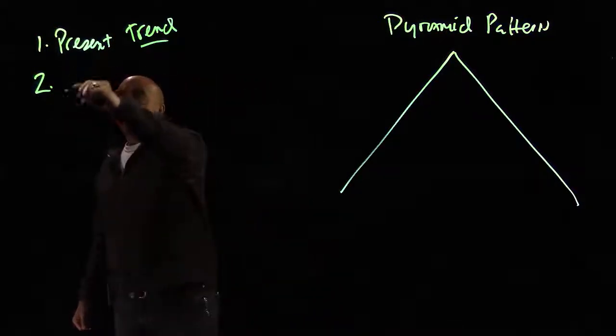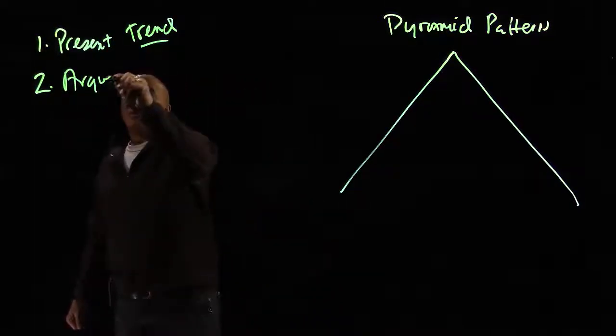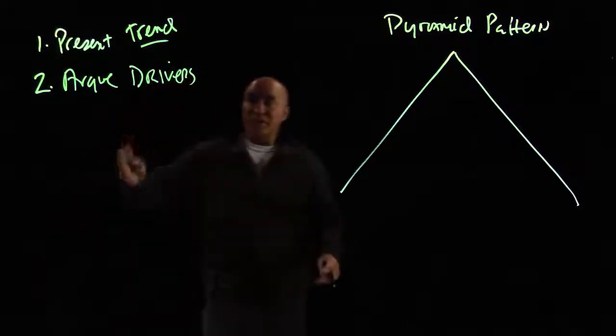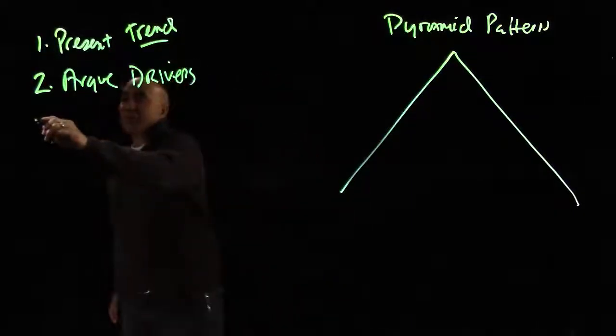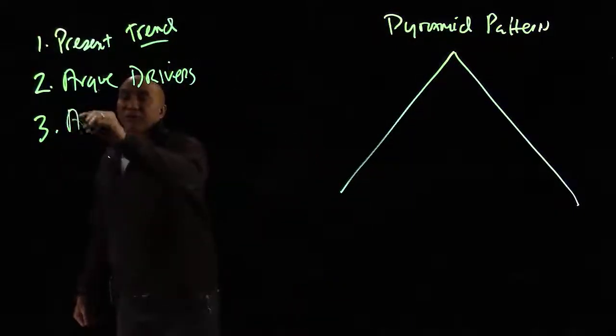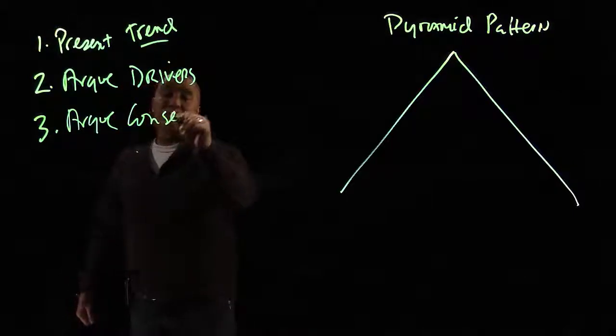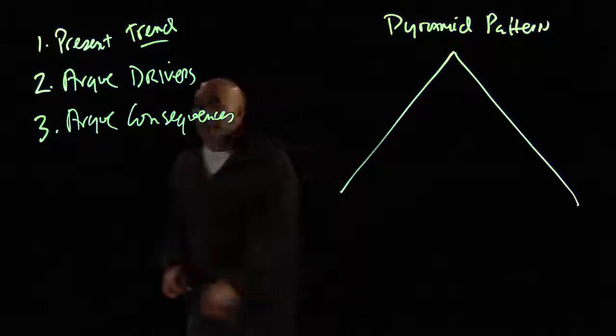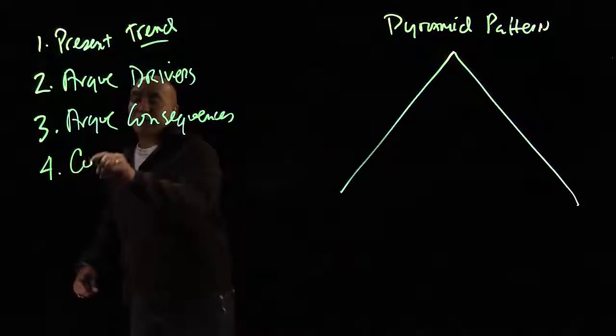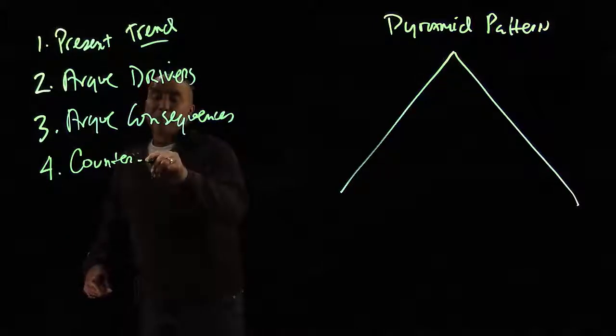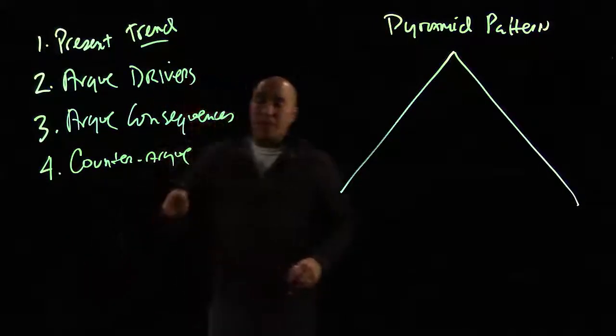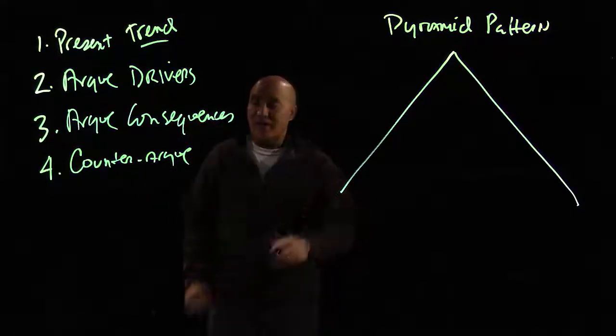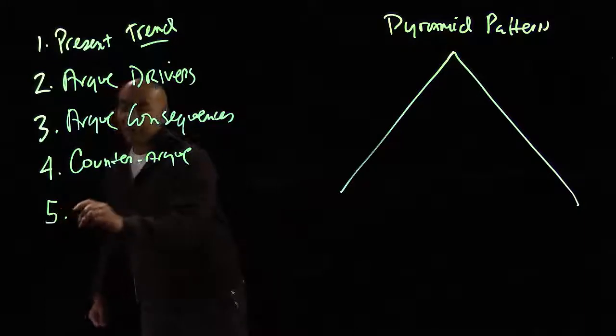Number two, now they have to argue for the drivers. Drivers that would drive this trend. Number three, they have to argue for consequences, or long-term effects. Number four, this is the counterargument section. And I call it, this is a little tricky for the first get, but then after they get it, they have it forever. And number five, the call to action.